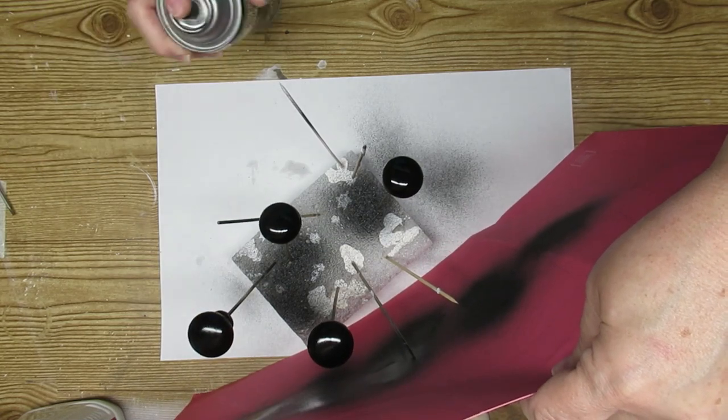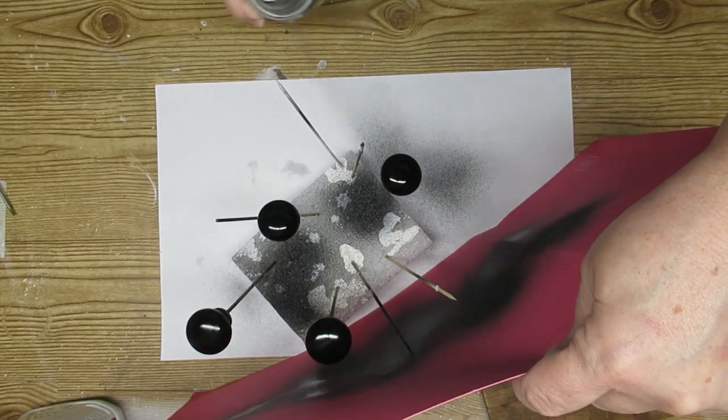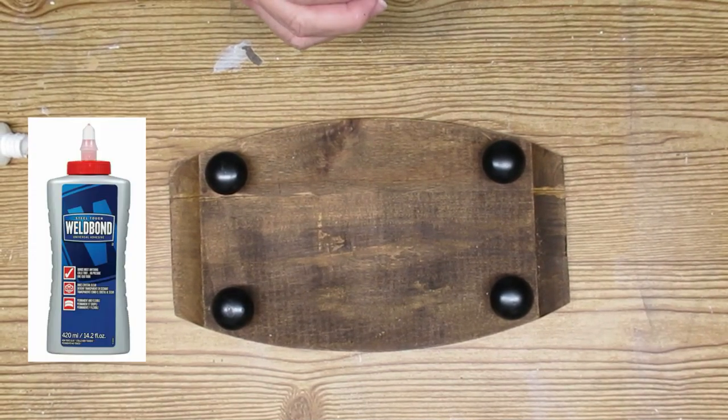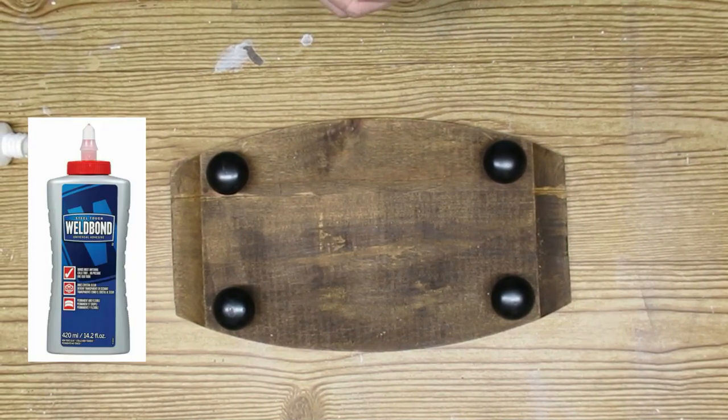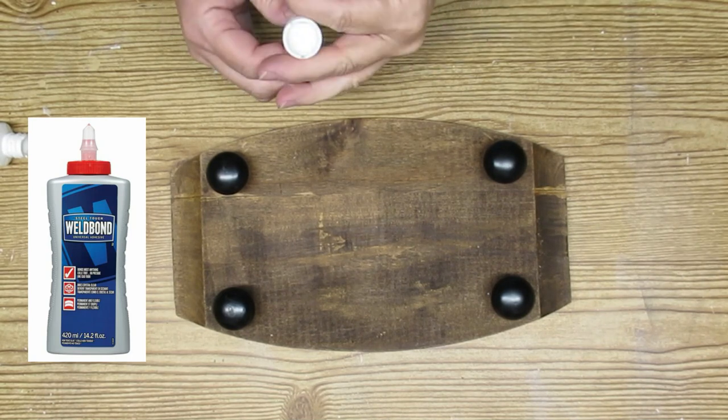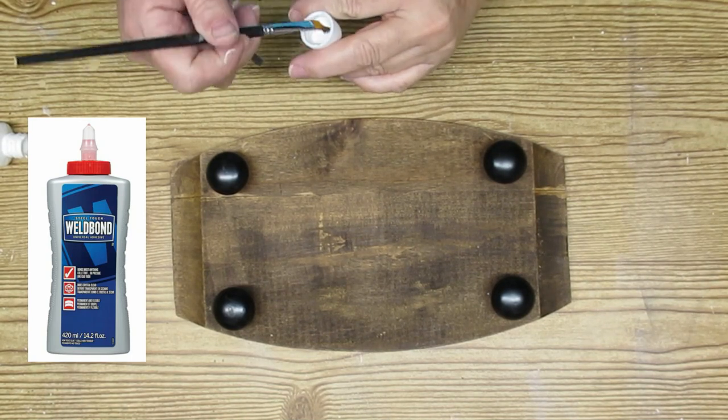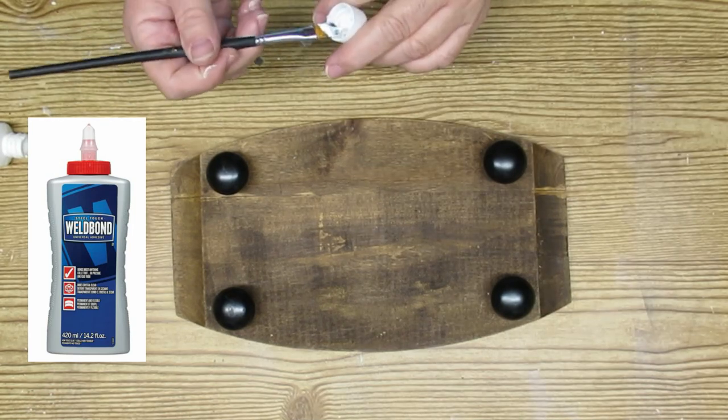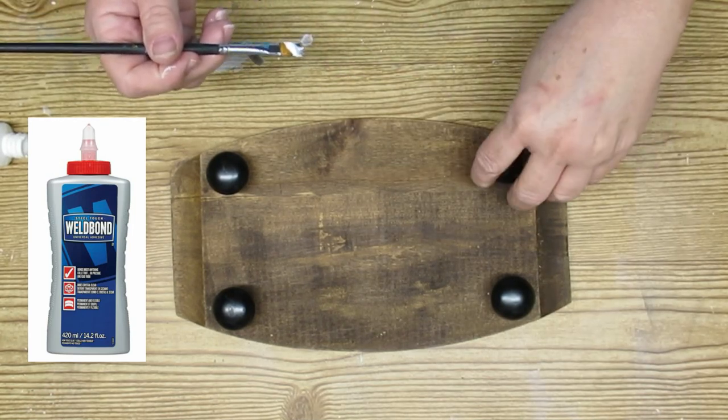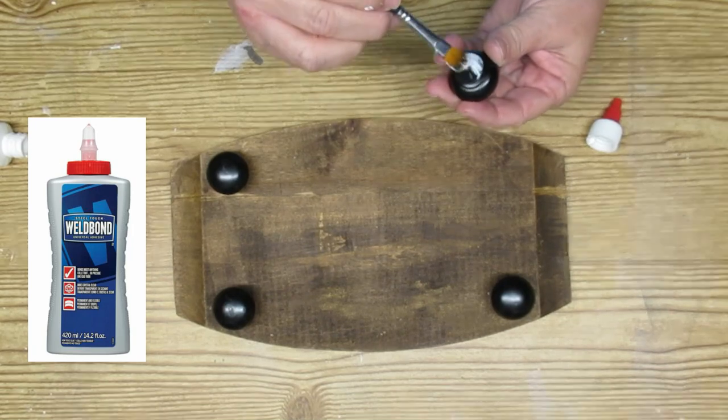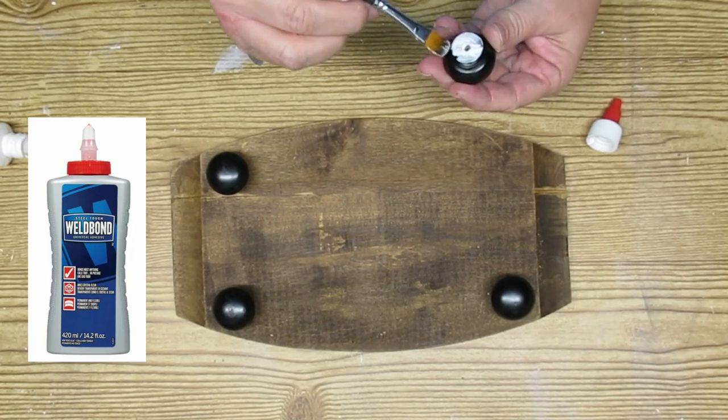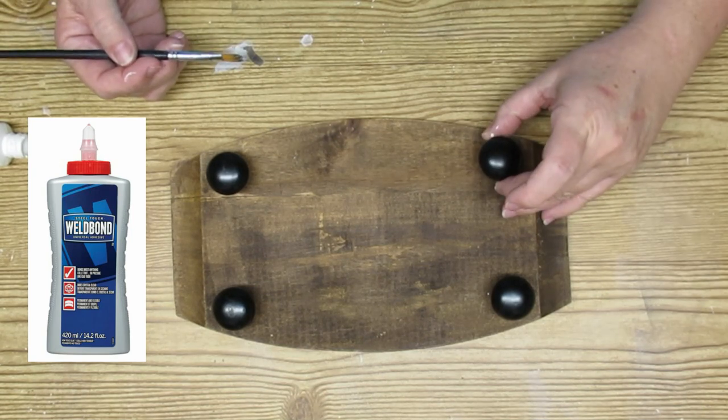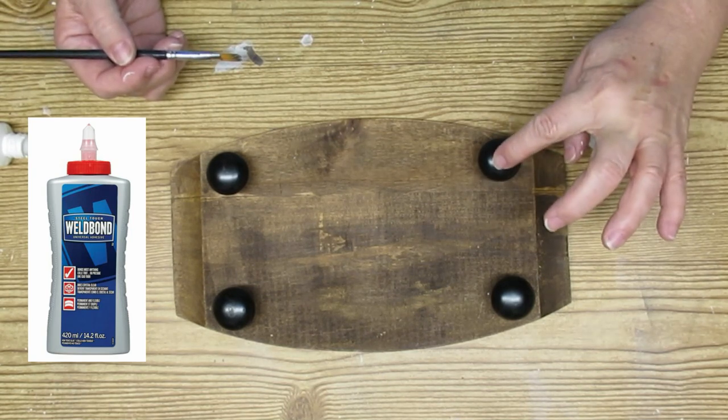I'm going to glue the feet on using Weld Bond glue. This is my favorite glue to use when I want a permanent hold. It's nice and thick and tacky and the main reason I love it is that it holds permanently forever but it also only takes about 10 minutes for it to dry so you can continue working on your project. That is a real game changer.